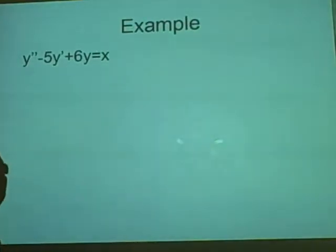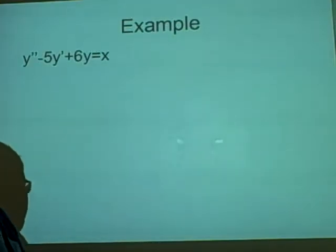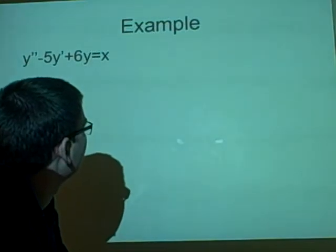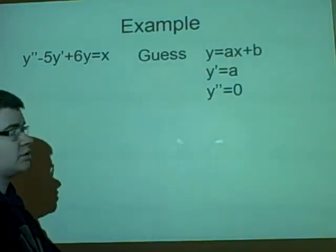Here's our example. We have y''-5y'+6y=x. Now if it was 0, we'd be fine, we'd change them for lambdas, we'd do all sorts of stuff, and we'd end up with a nice general solution. Because it's got an x, we could guess alpha + a + bx. Then we'd guess y=ax+b, same thing.